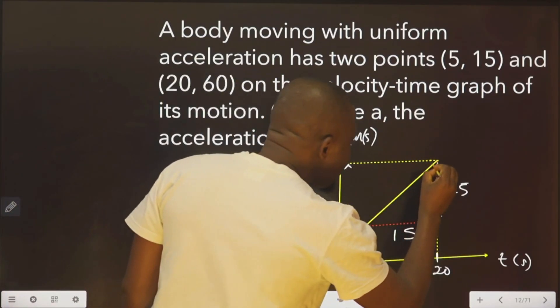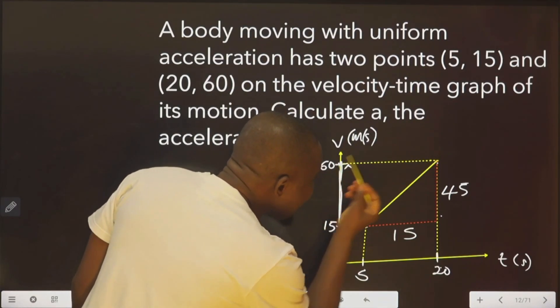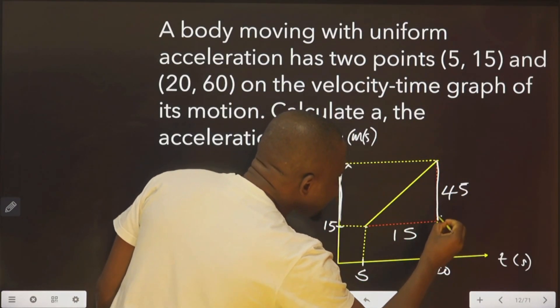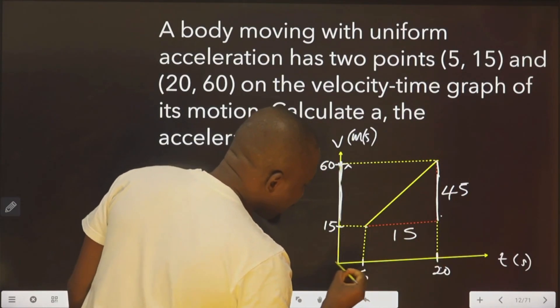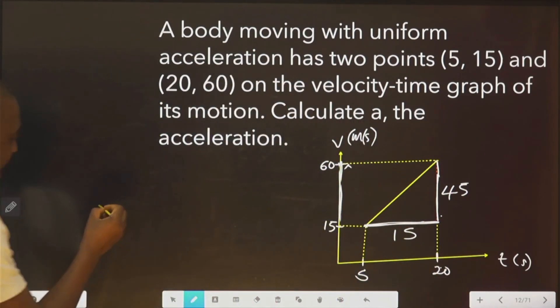Acceleration is velocity. You transfer this line here. Velocity over time. Over time. This one. Change in time. 15. Our acceleration is equal to 45 over 15.